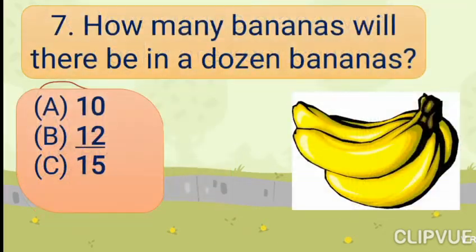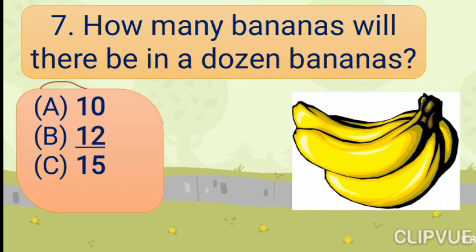How many bananas will there be in a dozen bananas? Option A: 10. Option B: 12. Option C: 15. Answer is Option B: 12. जब हम कोई चीज एक dozen में खरीदते हैं, तो उसके अंदर 12 आइटम होती हैं।